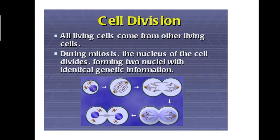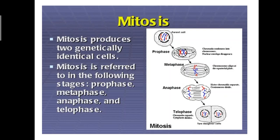All living cells come from other living cells. During mitosis, the nucleus of the cell divides, forming two nuclei with identical genetic information. Here, a cell structure during mitosis, nucleus of the cell divides and two nuclei are formed with identical genetic information. Mitosis produces two genetically identical cells. Mitosis is referred to in the following stages.